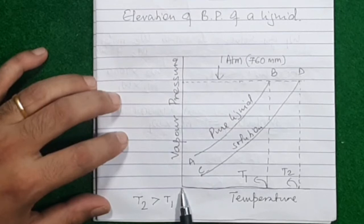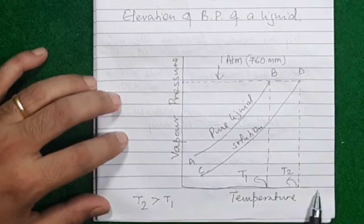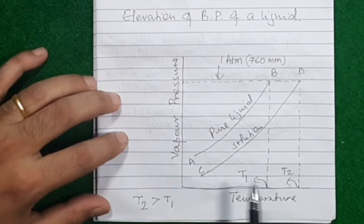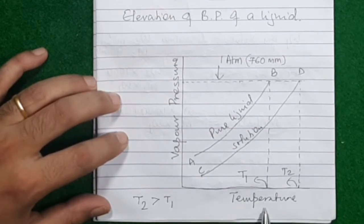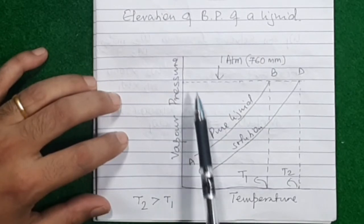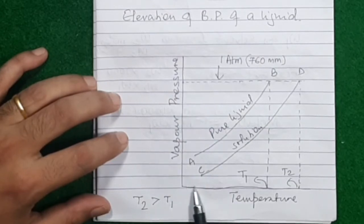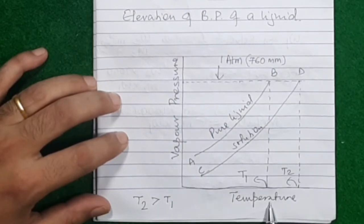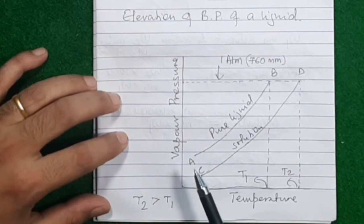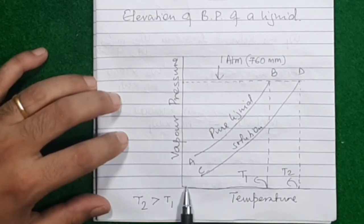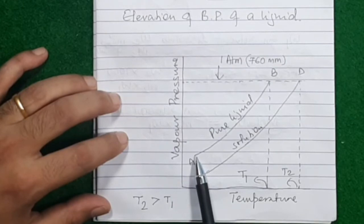Now I have a diagram where vapor pressure is plotted against temperature. Vapor pressure changes with temperature, so I want to see how it changes. On the y-axis we have vapor pressure and on the x-axis we have temperature. I've taken a pure liquid at low temperature, so its vapor pressure is also low.